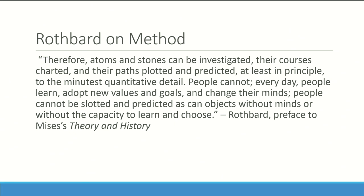Mises and Rothbard advocate a sort of methodological dualism — meaning we should adapt our methods for studying things based on what we're studying. If we're studying atoms, rocks, inanimate material, there's one way to approach questions about how we observe those things behaving. But if we are studying something totally different like man, who can think, act, make choices, and has a mind, then we should change the way we study that subject because it is fundamentally, categorically different. Rothbard says atoms and stones can be investigated and predicted in principle to the minutest quantitative detail; people cannot.